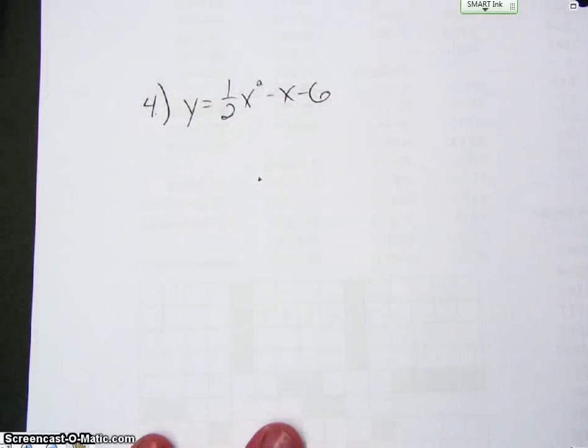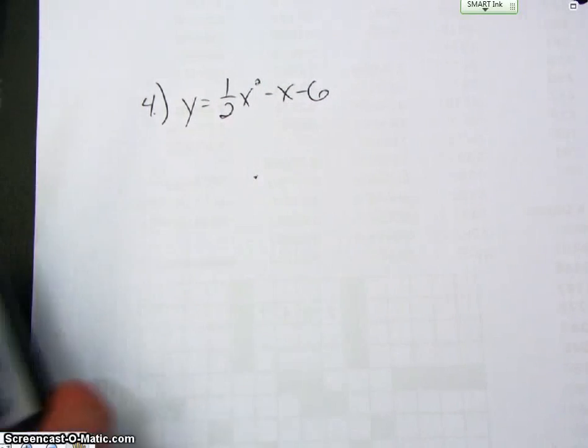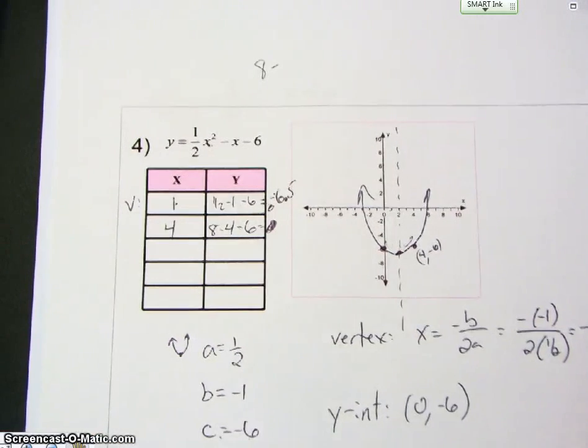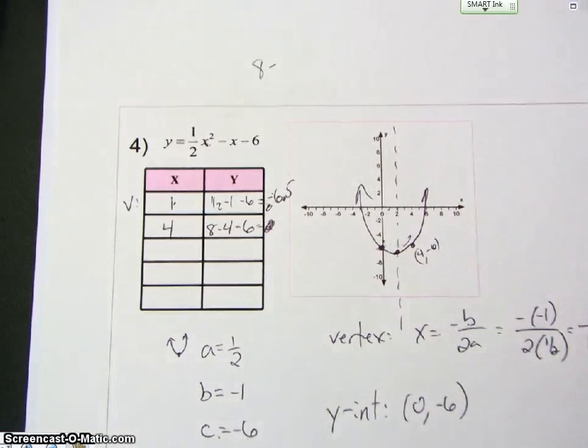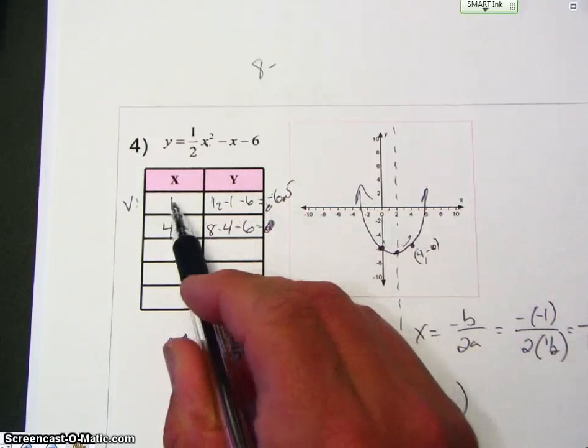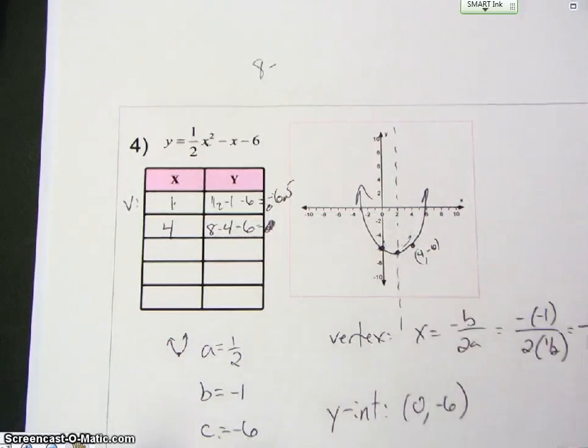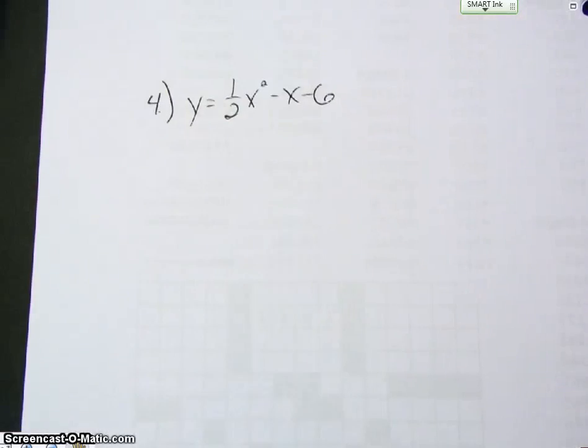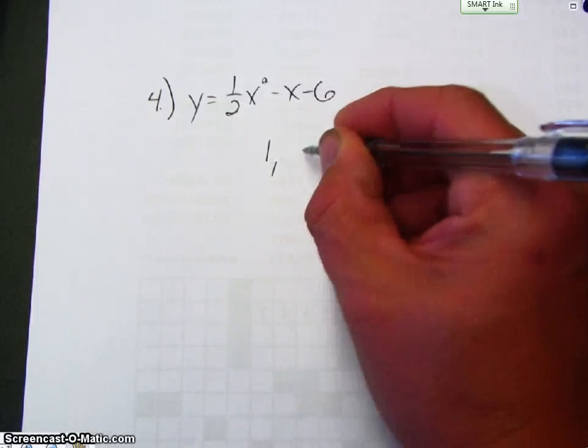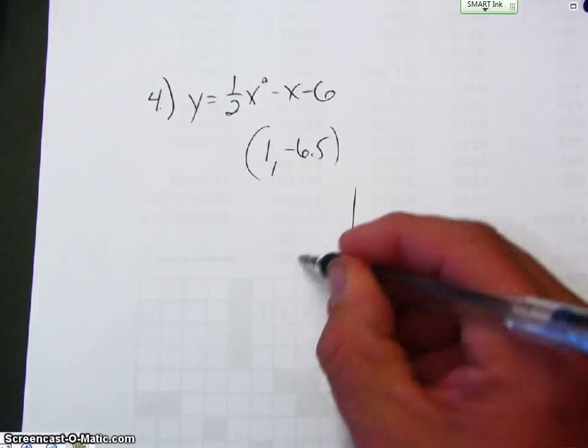In this problem, I made an error on my previous video number 4. This one right here. I'm going to redo it again. Everything is correct, except I plotted my vertex wrong. The vertex is at 1, negative 6.5 and I did it at 2, negative 6.5. So the vertex is still at 1, negative 6.5 from the previous video. That's still correct. I just graphed it wrong.